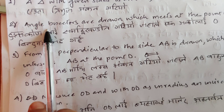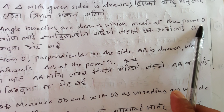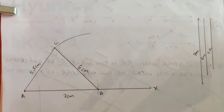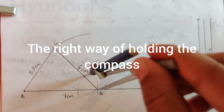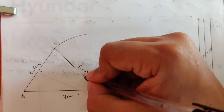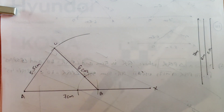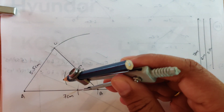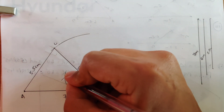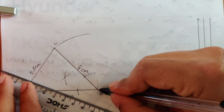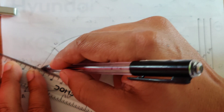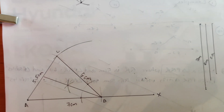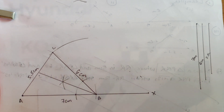Step two: angle bisectors are drawn which meet at point O. Let's draw the angle bisectors. Take any measurement — after that your compass must not move. Make arcs at your points. If the compass moves, your diagram will be wrong. This is the angle bisector of angle B.